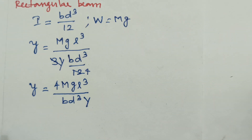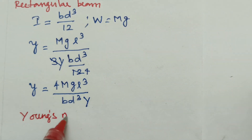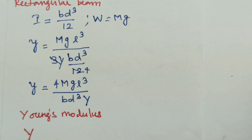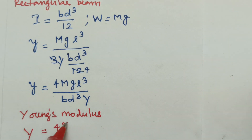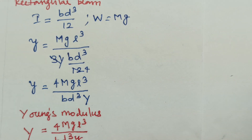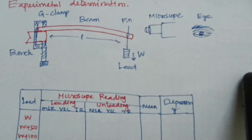What is the value of Young's modulus? From this equation you can write Young's modulus: capital Y equals 4mgL³ divided by bd³ times small y. This is the experimental determination of the cantilever Young's modulus.